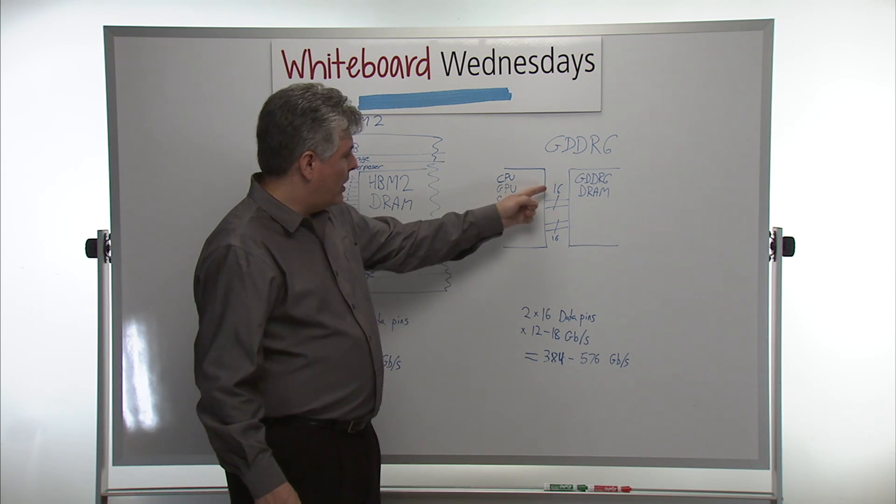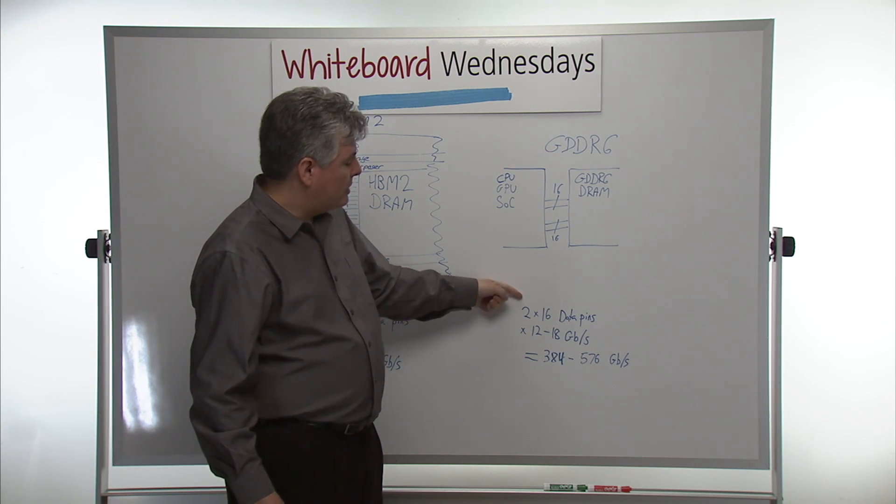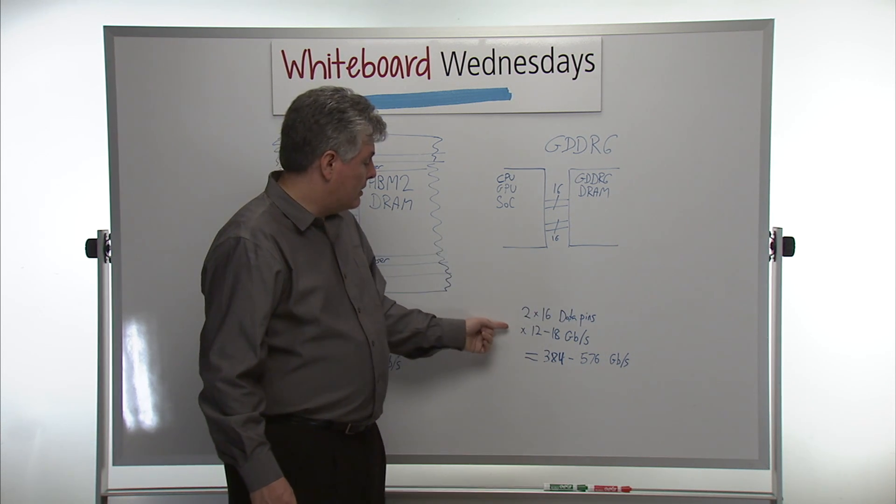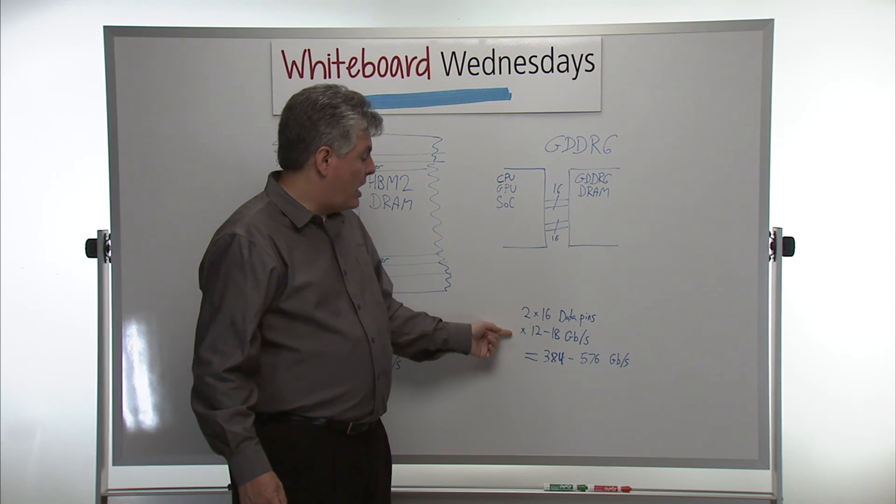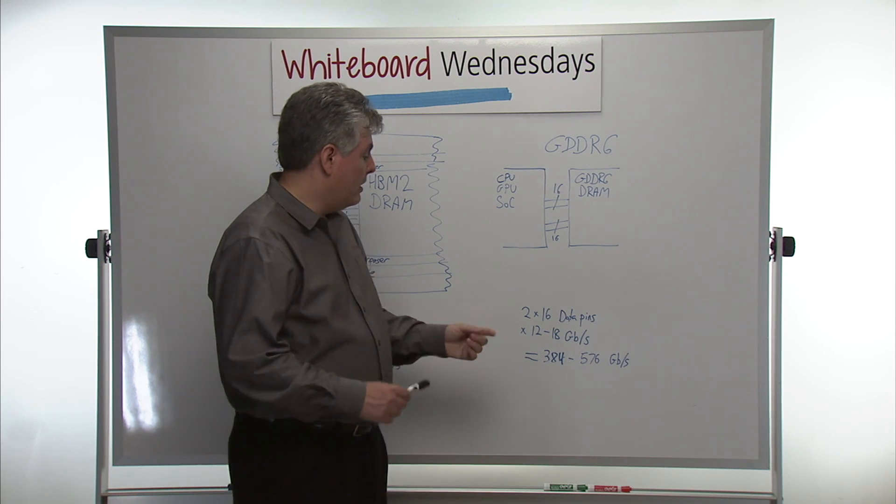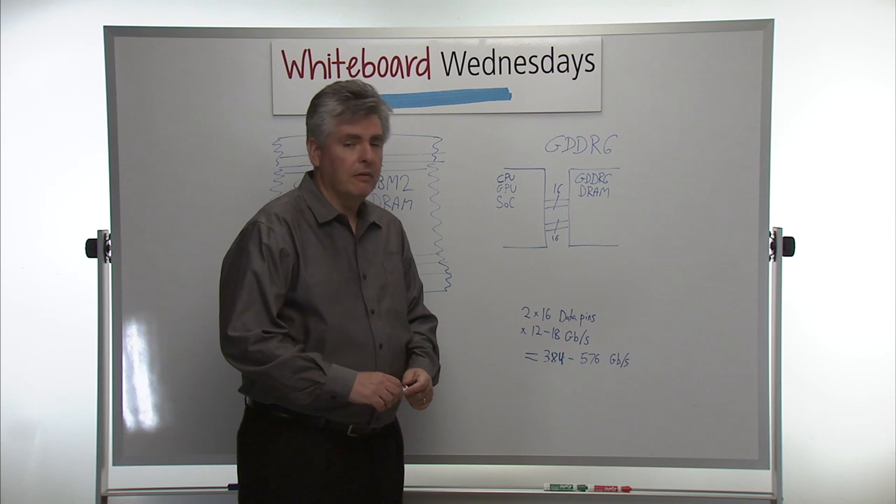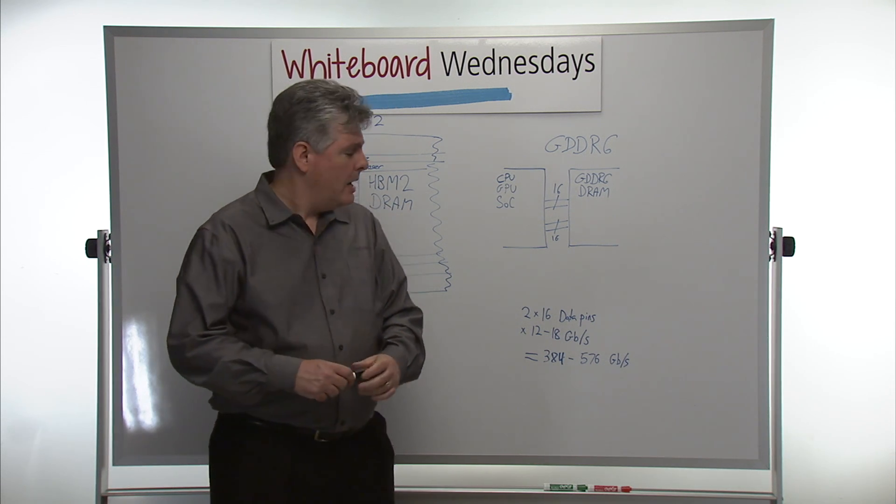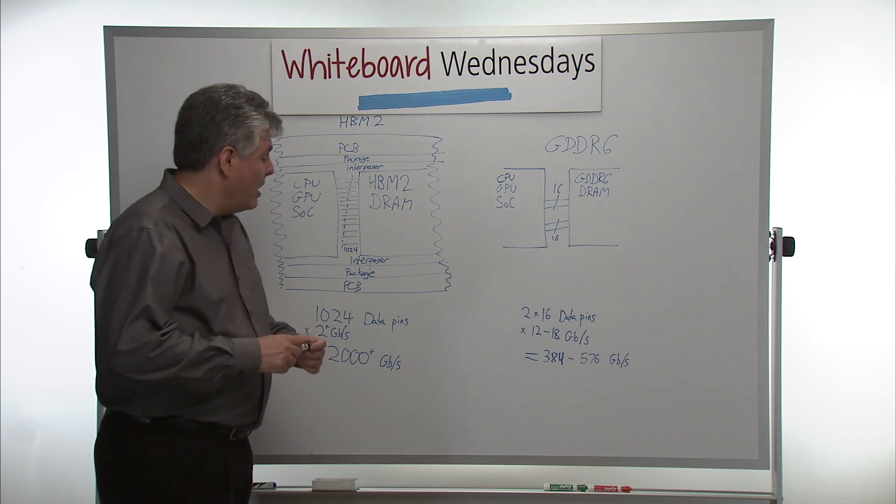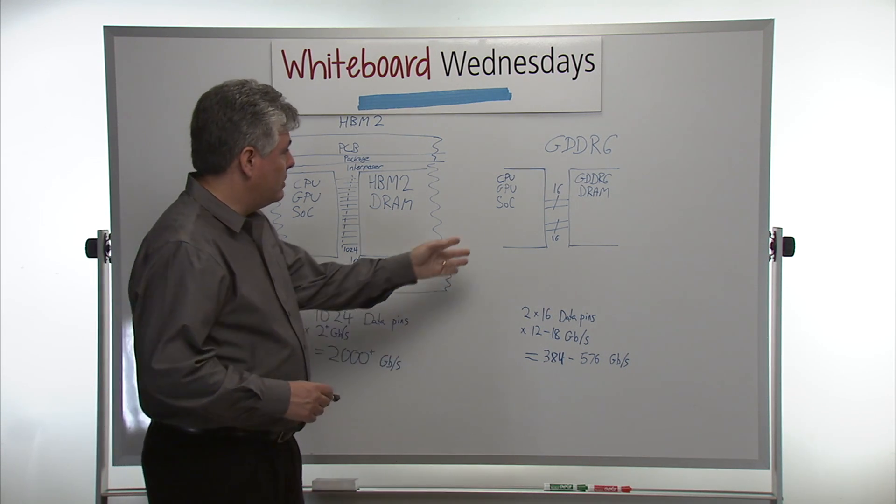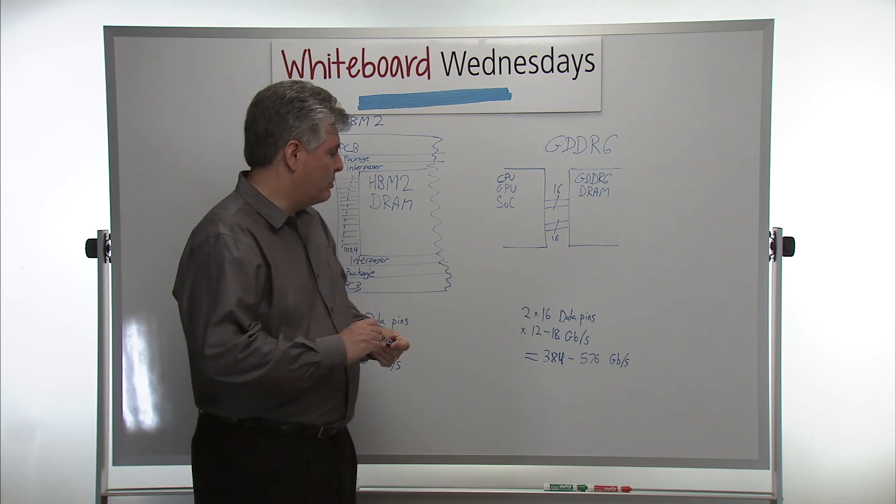What we end up here with from die-to-die bandwidth, the GDDR6 dies have got two 16-data bit buses. And the data rates, depending on manufacturer, depending on application, may be between 12 and 18 gigabits per second per pin. So we end up with a bandwidth in the range of 384 to 576 gigabits per second. So a little bit less than the HBM. But what we can do, of course, with GDDR6 is we can have multiple interfaces, just like we could have multiple interfaces with the HBM2.